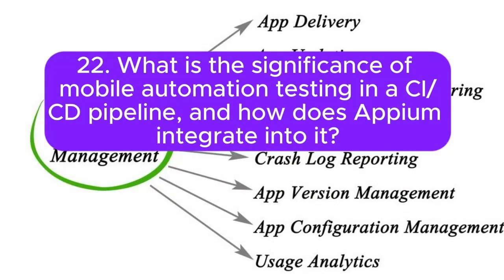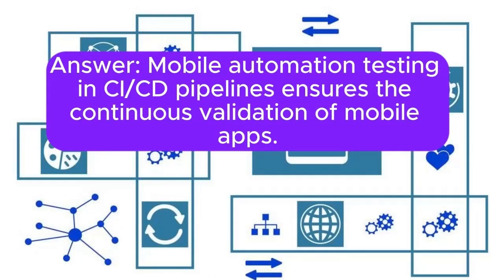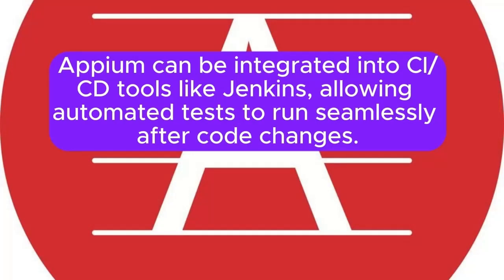22. What is the significance of mobile automation testing in a CI/CD pipeline, and how does Appium integrate into it? Mobile automation testing in CI/CD pipelines ensures the continuous validation of mobile apps. Appium can be integrated into CI/CD tools like Jenkins, allowing automated tests to run seamlessly after code changes.